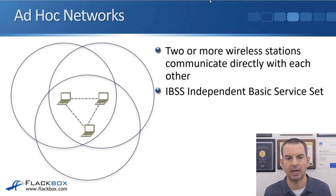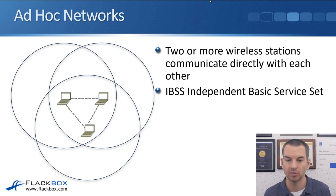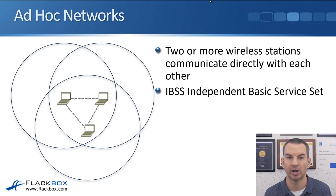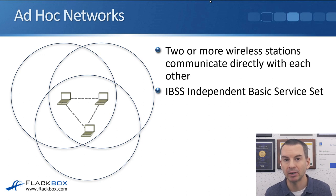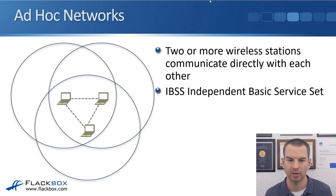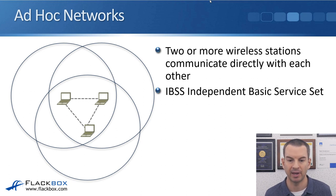Looking at ad hoc networks: with ad hoc networks, two or more wireless stations communicate directly with each other. Whenever a device communicates on the wireless network it's known as a station. An ad hoc network is a peer-to-peer network where wireless stations communicate directly with each other, and that peer-to-peer network is known as an IBSS — an independent basic service set.